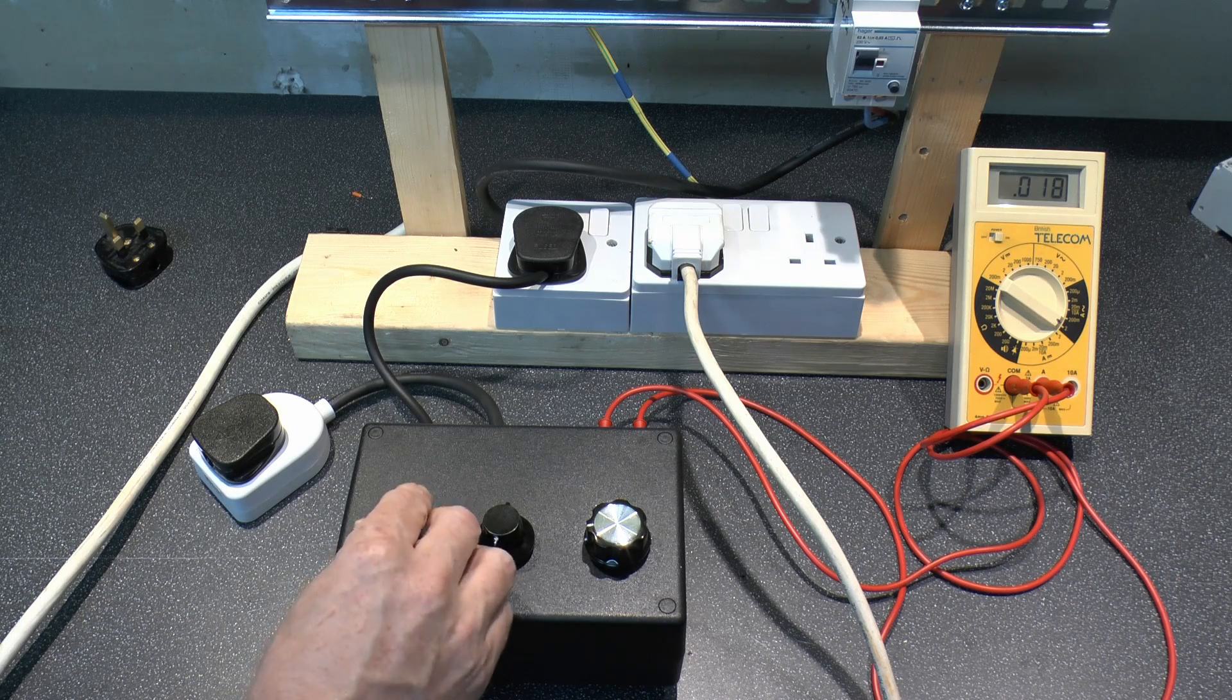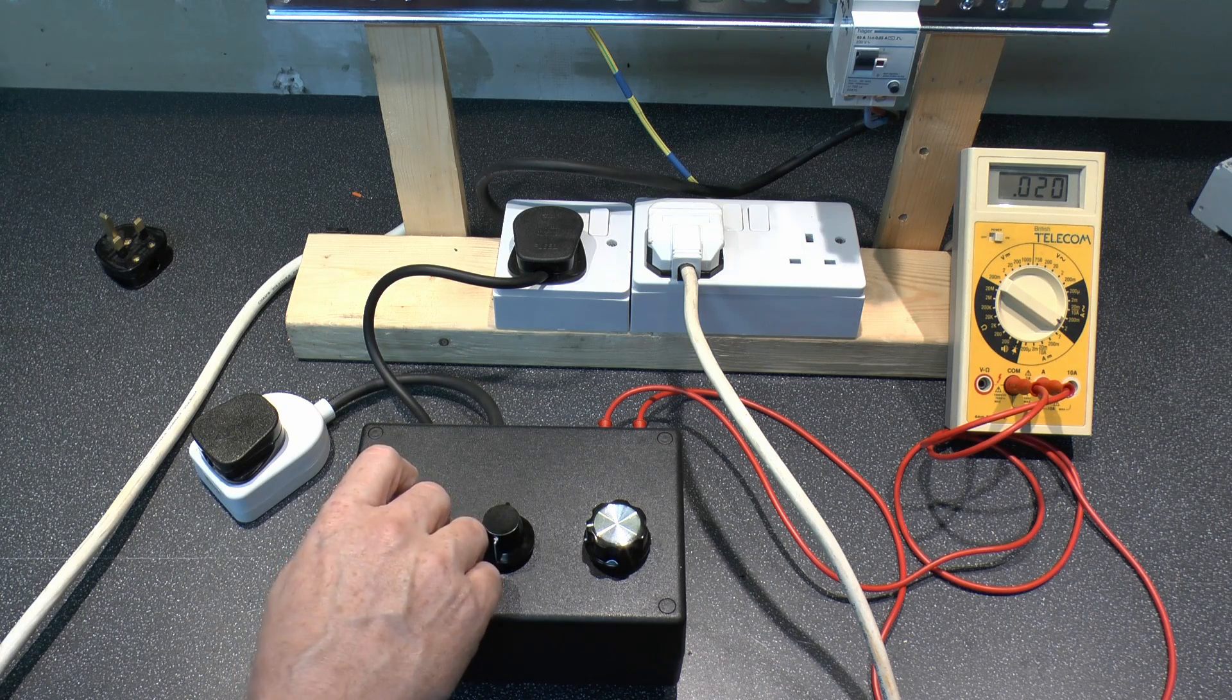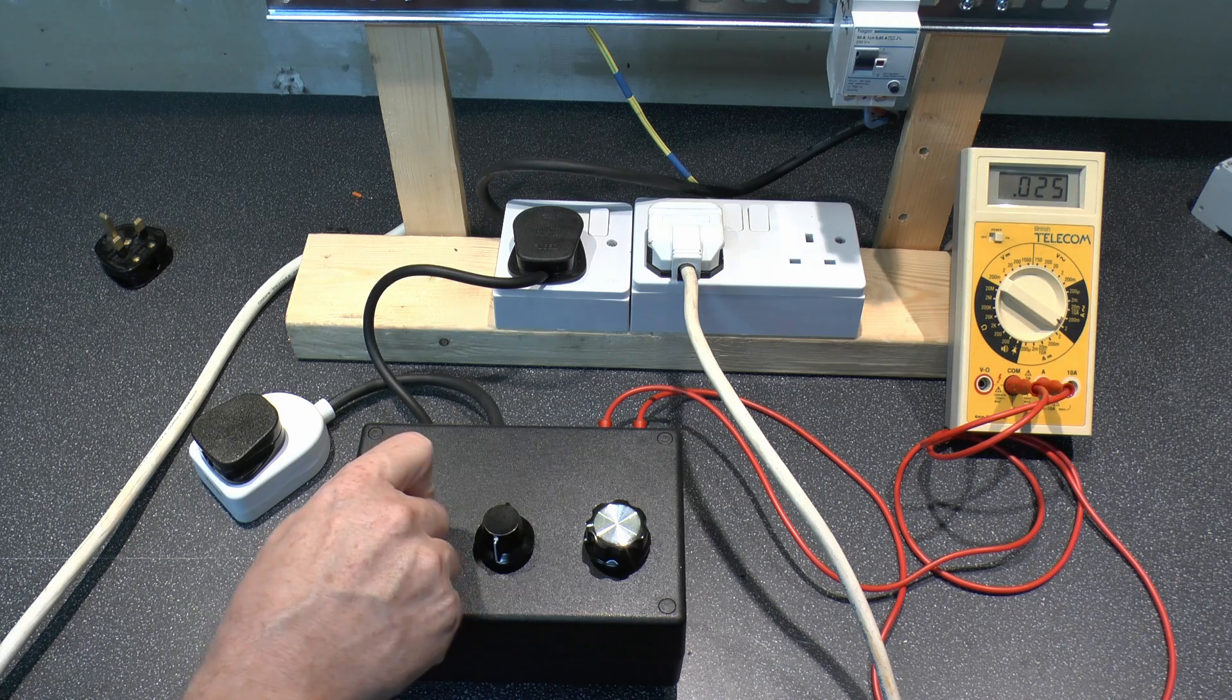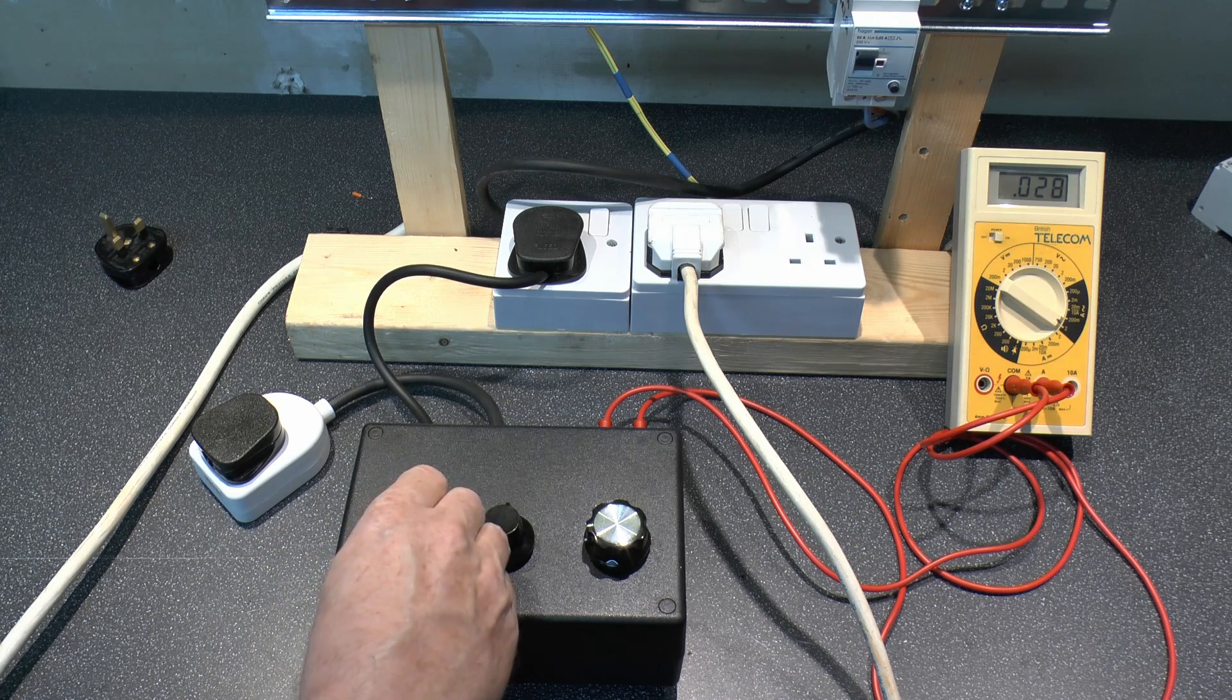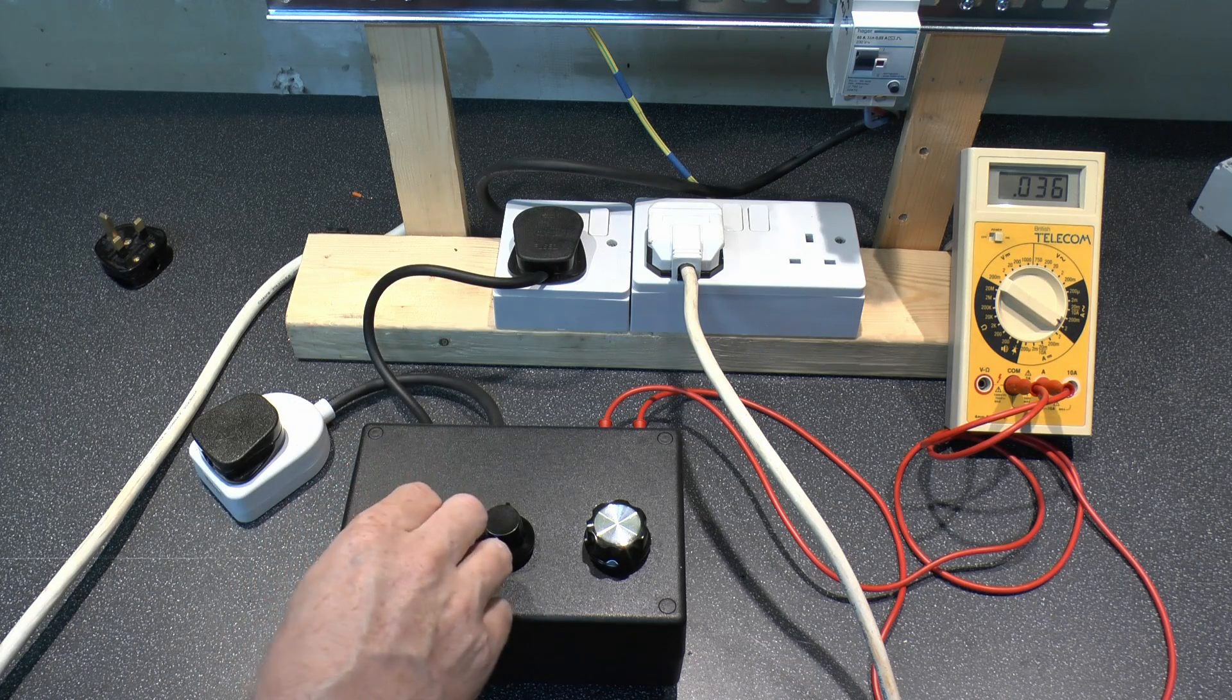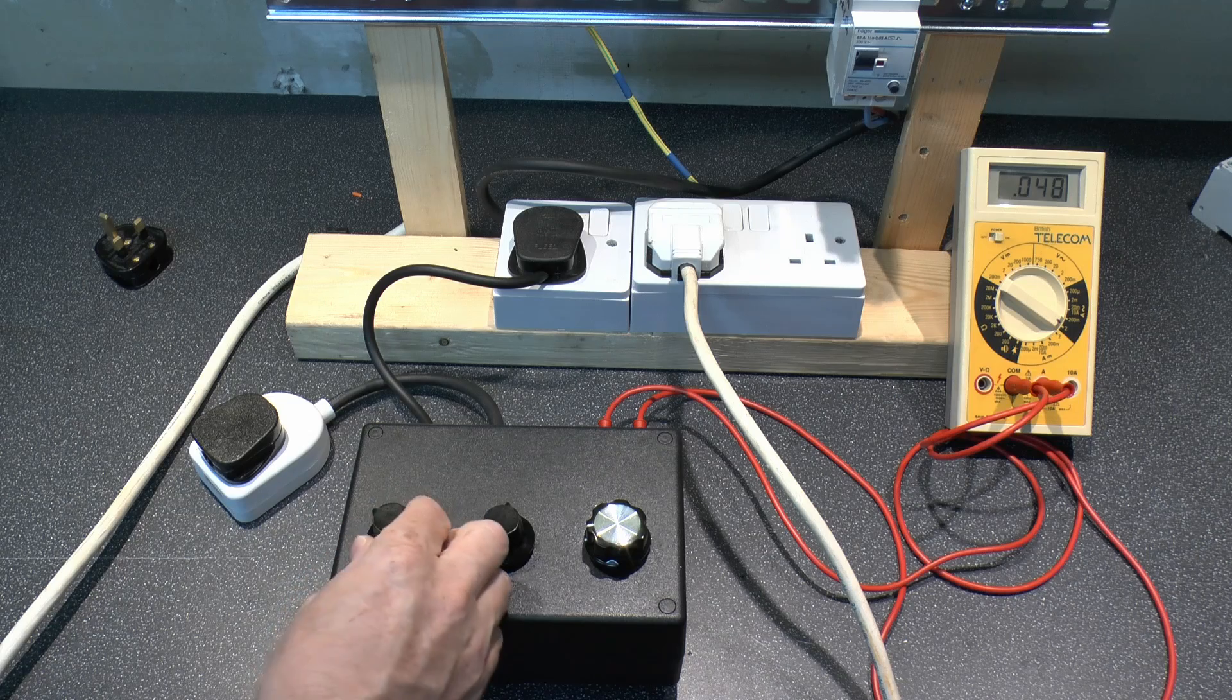Now bearing in mind it tripped around the 20 or 21 milliamps mark previously so we're just coming up to that now. But as you can see we're going past that particular level there so 25, 26. So we're now over 30 milliamps so this is beyond the specification of the device it should have tripped long ago by now. And we can continue turning the knob and increasing the current further.